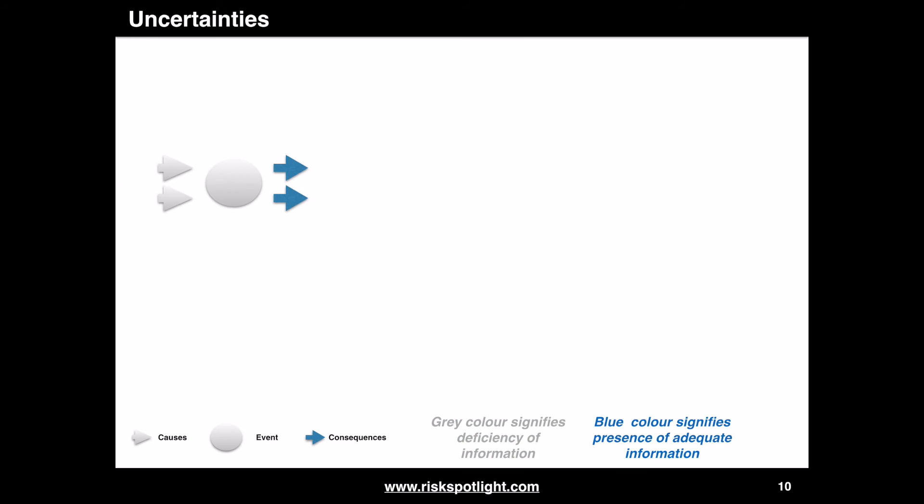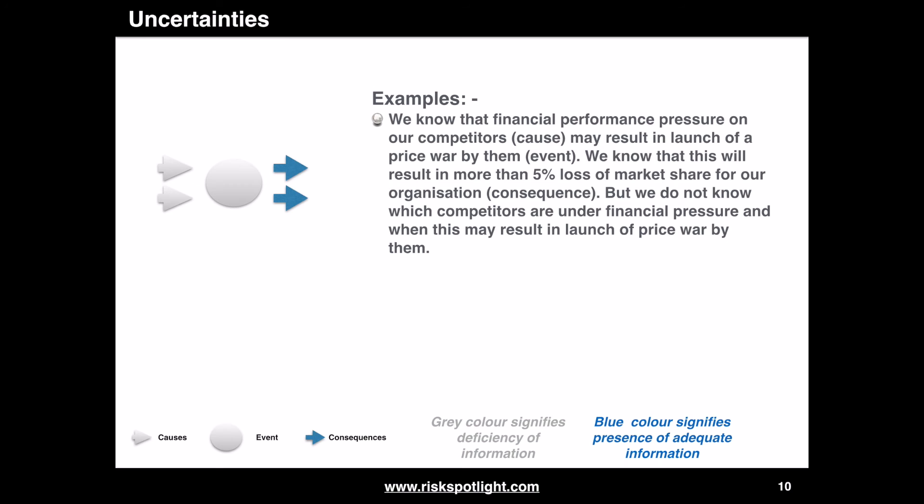The next variation covers the situation where we do not have adequate information about causes and events, but we do have adequate information about consequences. For example, we know that financial performance pressure on our competitors may result in a launch of a price war by them, and we know this will result in more than 5% loss of market share for our organization, but we do not know which competitors are under financial pressure or when this may result in a price war.